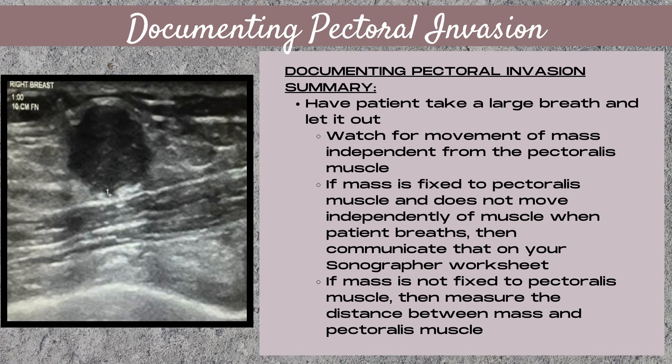Have your patient take a large breath and then let it out. While your patient is doing that, watch for movement of the mass independent from the pectoralis muscle. If the mass is fixed to the pectoralis muscle and does not move independently when the patient breathes, then clearly communicate that on your sonographer worksheet — it's important information for your radiologist to have. If the mass is not fixed to the pectoralis muscle, then measure the distance between the mass and the pectoralis muscle. This communicates to your radiologist that the mass is not fixed to the pectoral fascia, and demonstrates the distance between the mass and the chest wall.